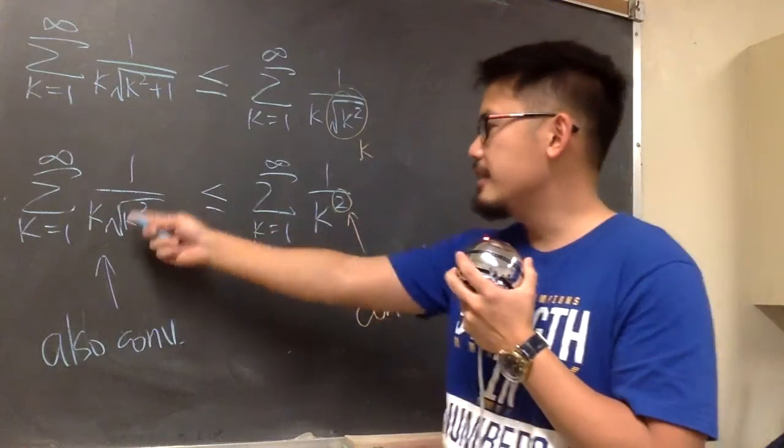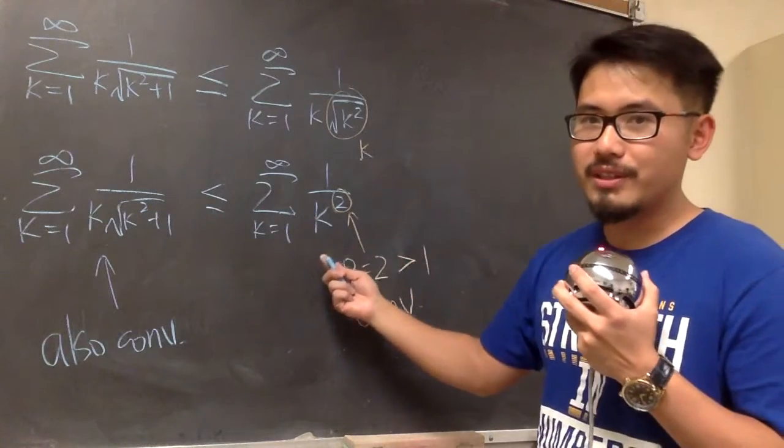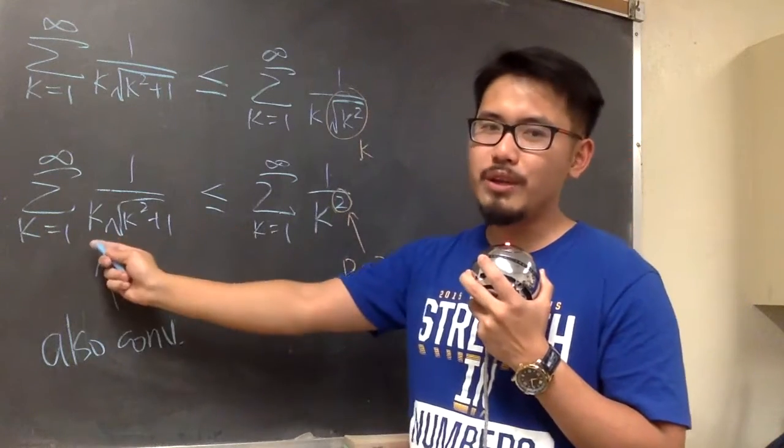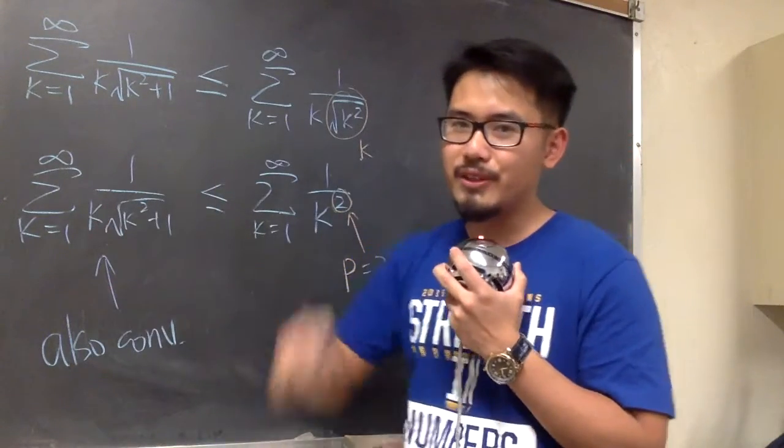When you show that this is less than a convergent, convergent is like finite. This is smaller than a finite value. It has to be a finite value as well, so it has to converge.